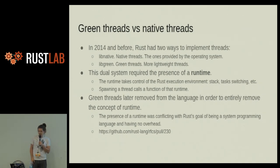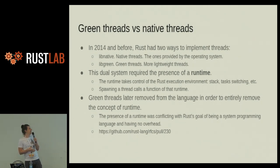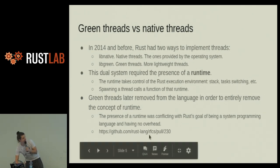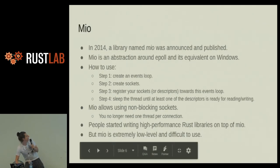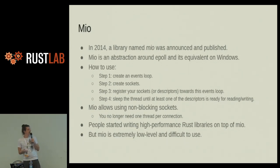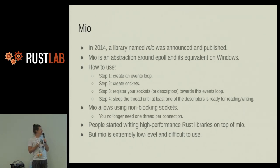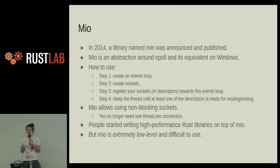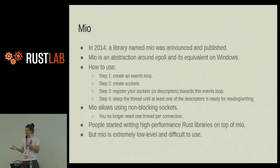A bit later, Mio got released in 2014 according to crates.io. Mio is an abstraction on top of ePoll — and its equivalent on Windows, which I don't know the name of. Step one: create an event loop. Step two: create your sockets. Step three: register your sockets. Step four: put the current thread to sleep until your sockets are ready. That made it possible to use non-blocking sockets. Without that, you need one thread per connection. Thanks to Mio, you don't need that anymore.